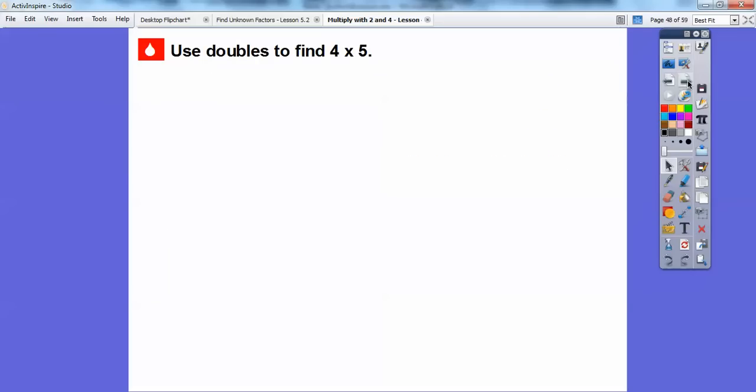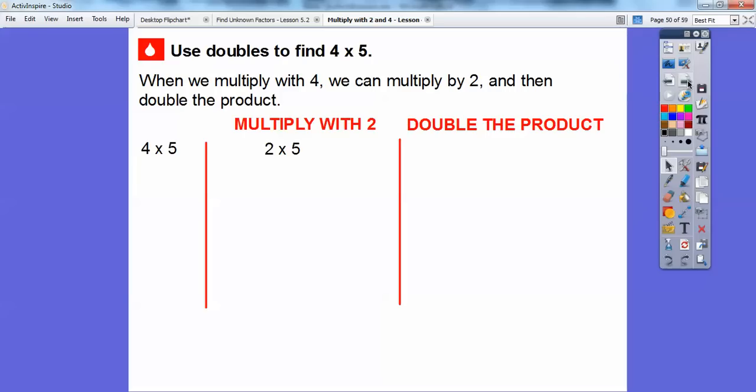All right. We can use doubles to find 4 times 5. So when you're multiplying by 4, then what you can do is you multiply by 2 and then double that answer. Double that product. The product is the answer. So let's multiply 4 times 5. We're going to first do 2 times 5 and get that answer, and then we'll just double that product. Whatever the answer is on 2 times 5, we'll just double that. A lot of you probably already know what 2 times 5 is. So here's my two groups right there, and then each one, there's going to be five dots in there.